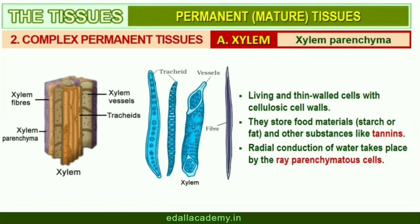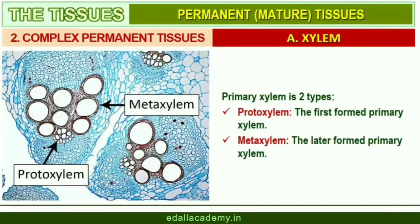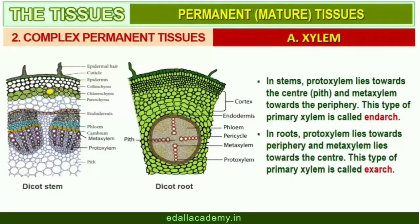The radial conduction of water takes place by the ray parenchymatous cells. Primary xylem is of two types: protoxylem and metaxylem. The first formed primary xylem elements are called protoxylem and the later formed primary xylem is called metaxylem. In stems, the protoxylem lies towards the center (pith) and metaxylem lies towards the periphery; this type is called endarch. In roots, the protoxylem lies towards the periphery and metaxylem towards the center; such arrangement is called exarch.